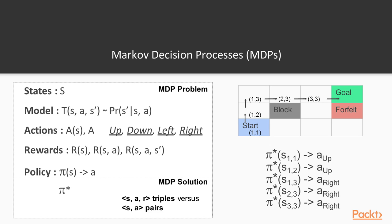If you look at the MDP problem concepts — states, model, actions, rewards — we've talked about states, actions, and rewards, so we don't need to elaborate on that. The critical property or difference between the Markov decision process approach to reinforcement learning and the model-free approach is that with Markov decision processes, we have some explicit knowledge about the transition probabilities, or the transition model or transition function.